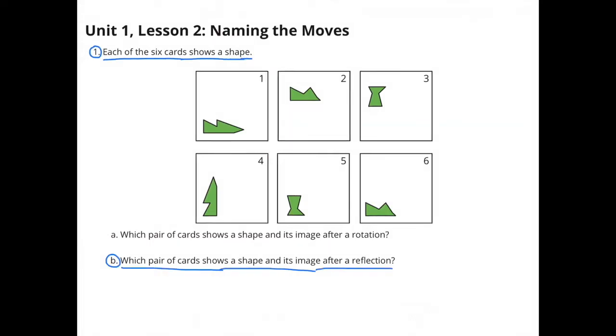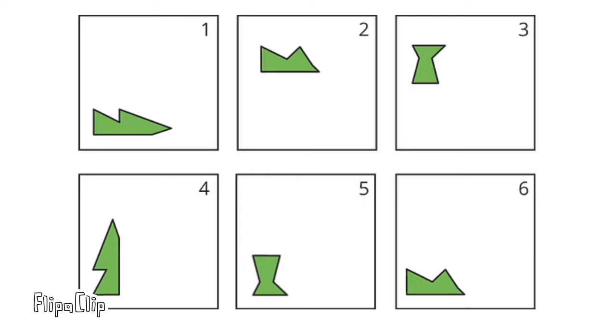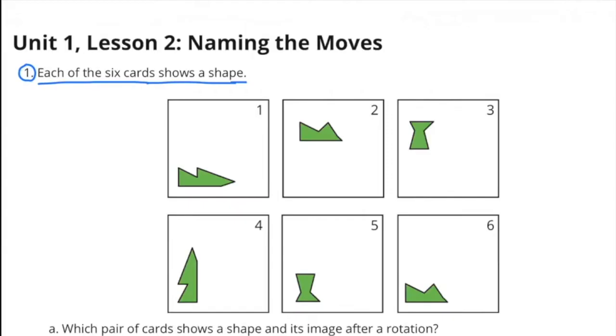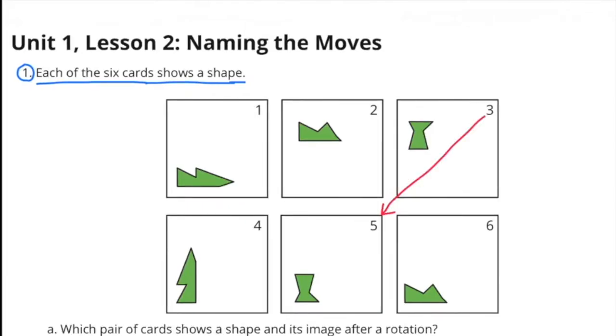B: Which pair of cards shows a shape and its image after a reflection? Take a look at cards 5 and 3. The shape on card 5 is a mirror image of the shape on card 3. Cards 3 and 5 show the shape and its image after a reflection.